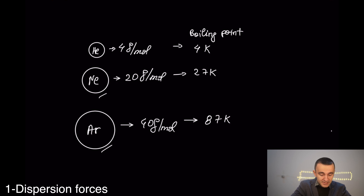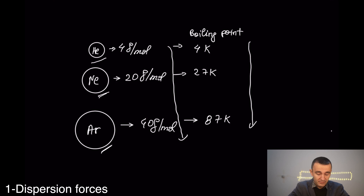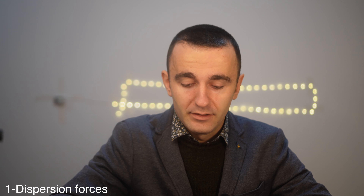Looking at noble gases — helium, neon, argon — we see an increase in molar mass accompanied by an increase in boiling point, meaning atoms are more strongly attracted to one another. This reflects an increase in dispersion forces. However, molar mass alone does not always exactly correlate with the magnitude of dispersion forces.